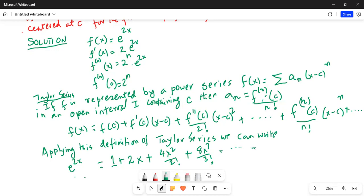is equal to summation from n = 0 to infinity of (2x)^n divided by n factorial. This is my final answer.